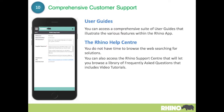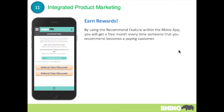Rhino also has comprehensive support — you can go into the help, type in a question, and it'll provide you with a list of responses. Embedded in those responses you'll find video tutorials which illustrate how to do something in the app. You can also earn rewards each time you refer the Rhino app to another company — if they sign up and become a paying customer, you will receive a free one-month extension to your licence.